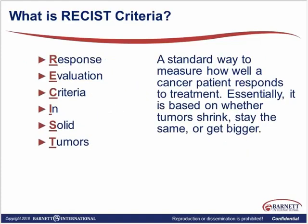RECIST is an acronym standing for Response Evaluation Criteria in Solid Tumors. It's a standard way to measure how well a cancer patient is responding to treatment. It was developed through an international collaboration, and the NCI defines RECIST criteria as a voluntary international standard rather than their own NCI standard. They are based on a simplification of former methods by the World Health Organization and ECOG, specifically focusing on measurable disease and the presence of at least one measurable lesion — essentially whether the tumor shrinks, stays the same, or gets bigger.